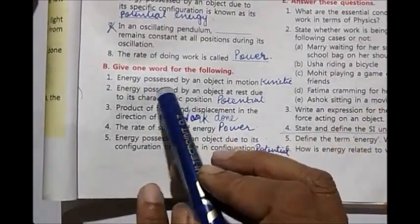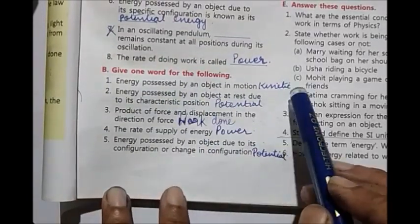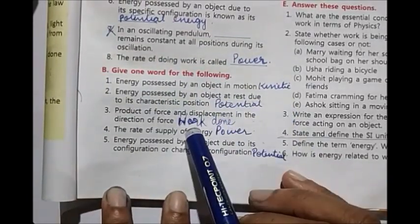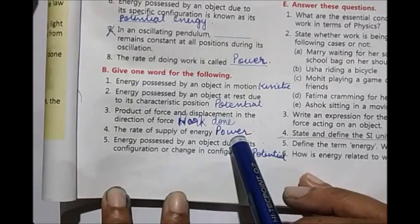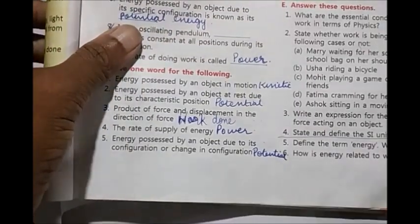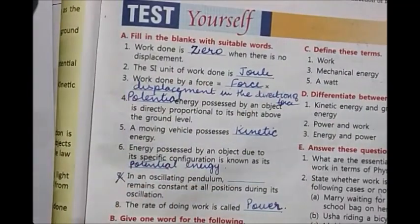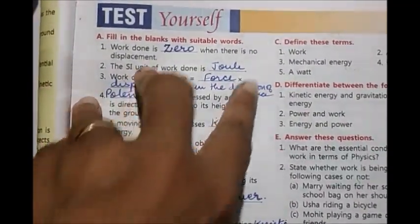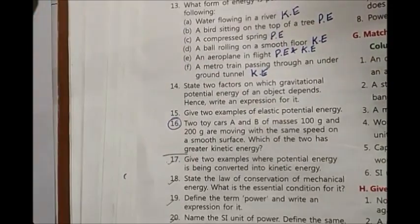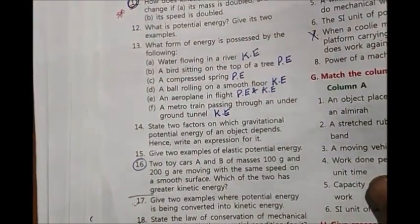Coming to one word answer: first one kinetic, second potential, third work done, fourth power, fifth potential. I'm sure you were able to do all this. There you have the answers directly in the book. Few questions which are a little bit indirect, I'll just discuss those answers.